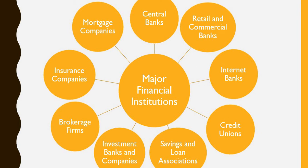The second major financial institution in the financial industry is retail and commercial banks. These are the banks that we visit on a regular basis. A few examples: we have Corporation Bank, Union Bank, Bank of India, State Bank, and so on and so forth.